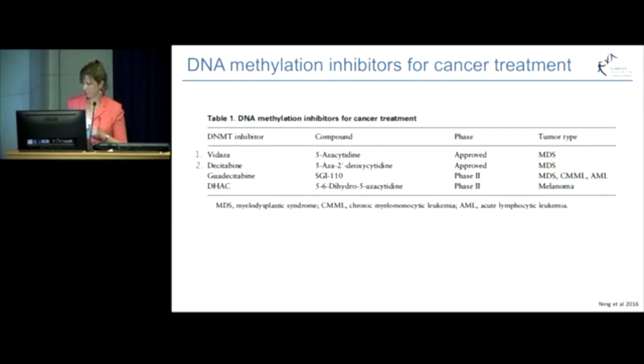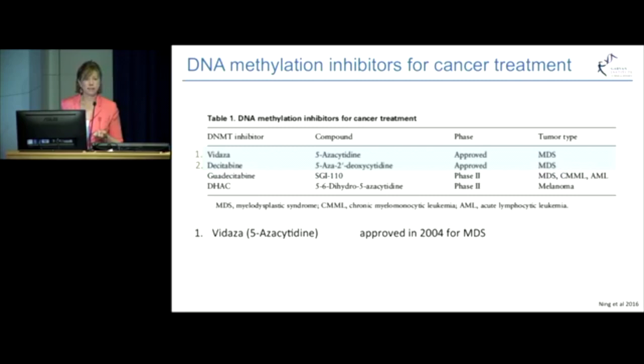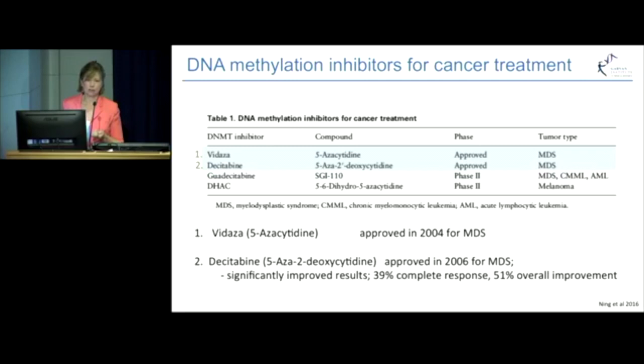This table shows some of the DNA methylation inhibitors being used. In particular, 5-azacitidine was approved in 2004 for MDS leukemia, and the second one, decitabine — which is 5-aza-2'-deoxycytidine — was approved for MDS in 2006 and has had significant impact on improved outcomes for patients. The table also shows other drugs coming through, including SGI-110, which is in phase 2 trials, as is the DNMT inhibitor under study.